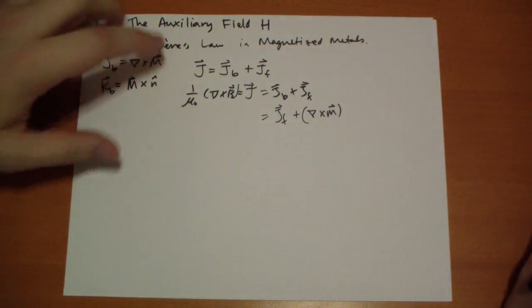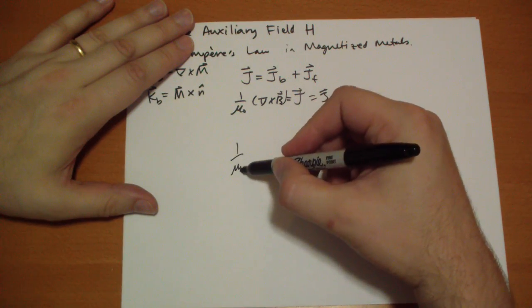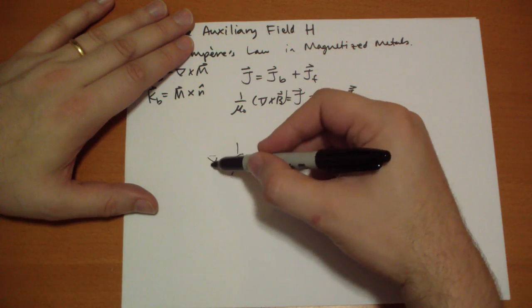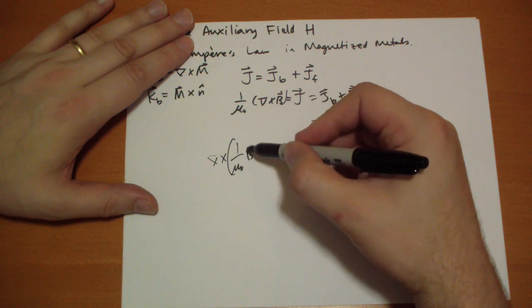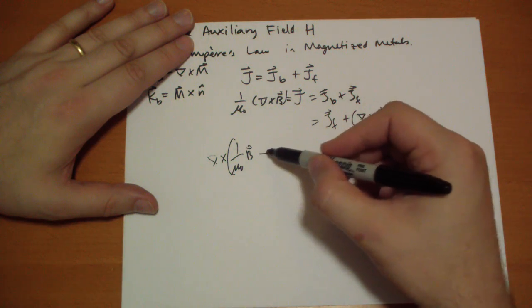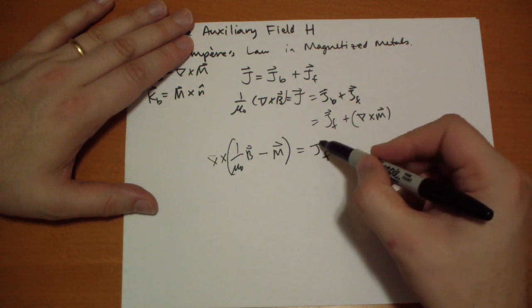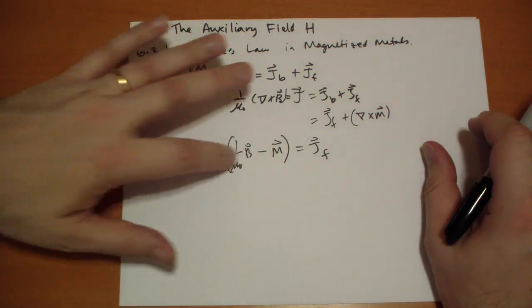If we collect these two to the same side, we get 1 over mu naught. The curl of 1 over mu naught of the B field minus the magnetization will give you the free current. Or rather, the free current will give you this value right here.